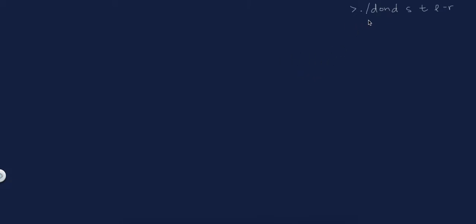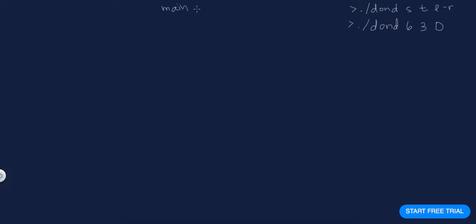I'm going to go over one example of DOND — dice or no dice. The parameters are: 6 sides, 3 rolls, and the last roll is zero. Main is where you read in command line arguments, parse them, save them, and then main will call your recursive function DOND with 6 sides, 3 rolls left, and the last roll being zero.